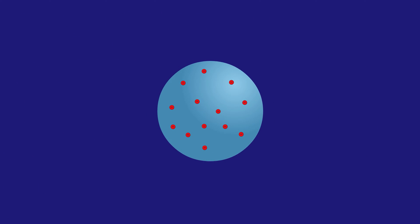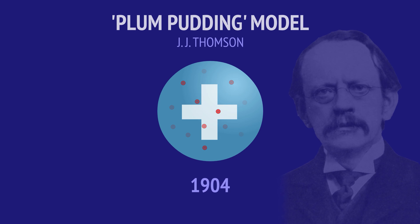In 1904, JJ Thomson discovered that atoms contain negatively charged particles called electrons. But because the overall charge of the atom was neutral, he proposed the plum pudding model, describing the atom as a positive sphere with electrons floating inside it, like pieces of fruit in a pudding.